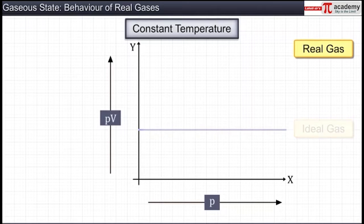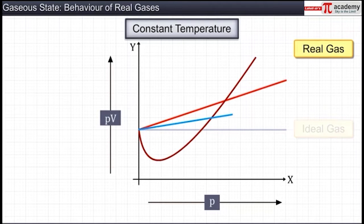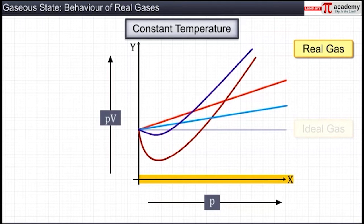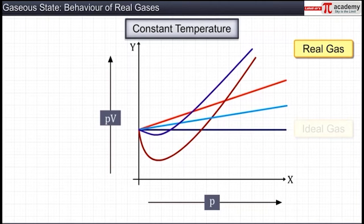However, for a real gas, we find that the plotted line is not a straight line parallel to the x-axis. This shows that real gases, which include almost all gases such as nitrogen, oxygen, hydrogen, and carbon dioxide, show a significant or appreciable deviation from ideal gas behavior.